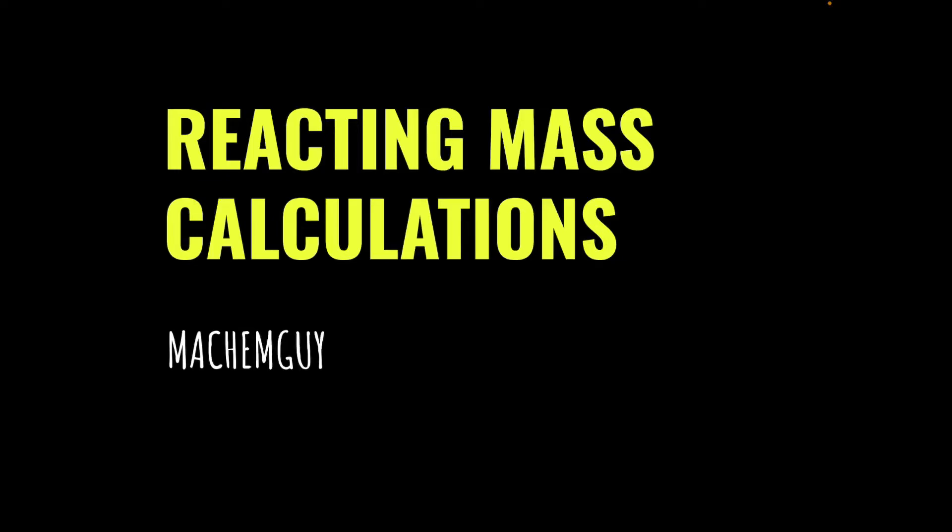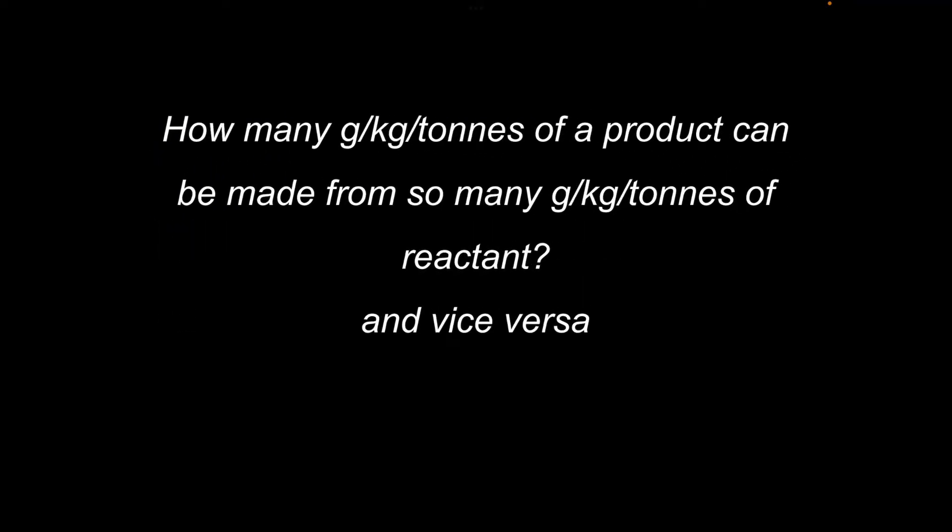In this video, I'm going to take a look at reacting amount calculations that involve masses of chemicals, also known as reacting mass calculations. So we're basically dealing with questions like how many grams, kilograms, or tonnes of a product can be made from so many grams, kilograms, or tonnes of a reactant, or it could be the other way around, where you're calculating how much reactant you need to make a certain amount of product.